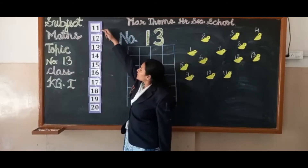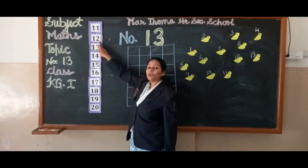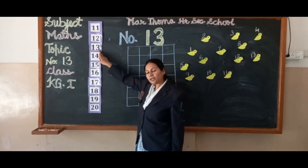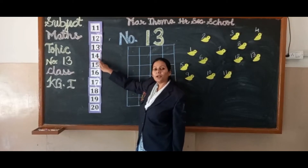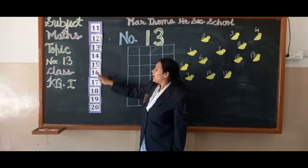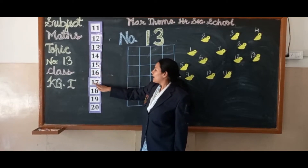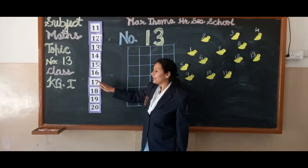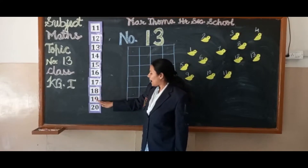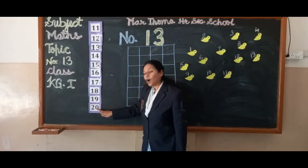Let's count. One, one — 11. One, two — 12. One, three — 13. One, four — 14. One, five — 15. One, six — 16. One, seven — 17. One, eight — 18. One, nine — 19. Two, zero — 20.